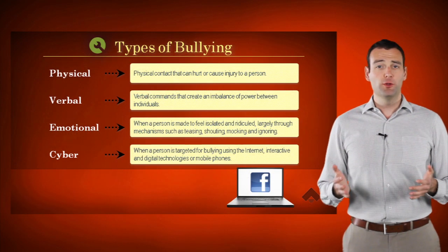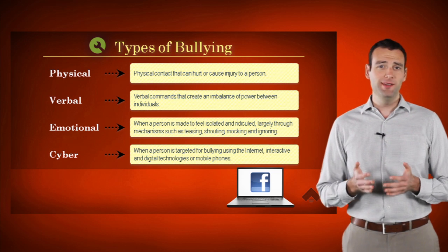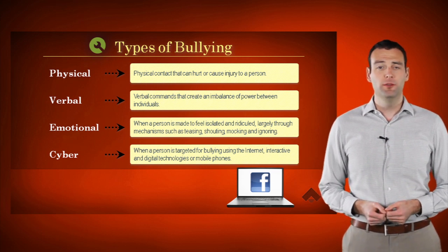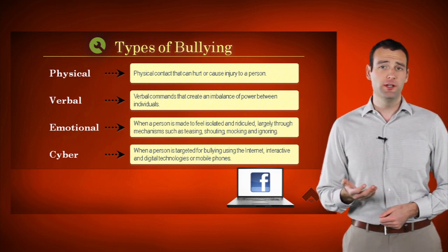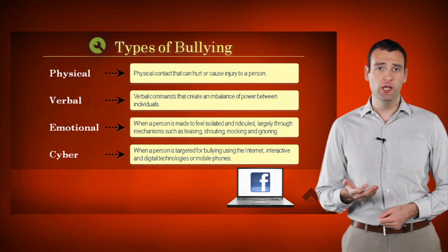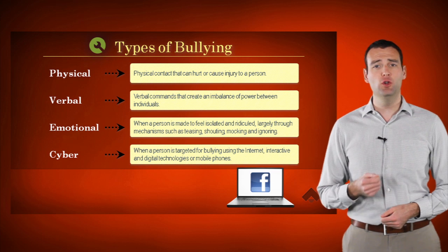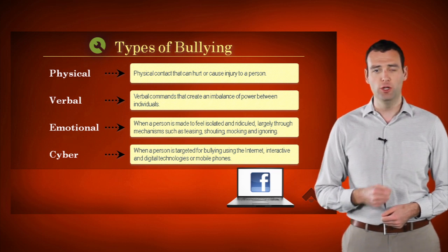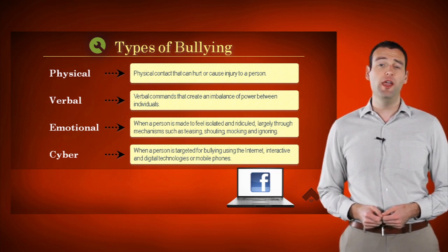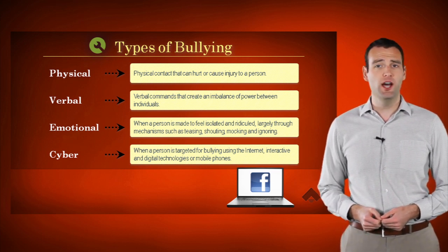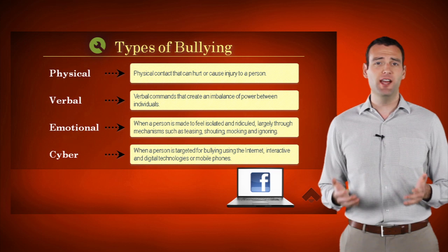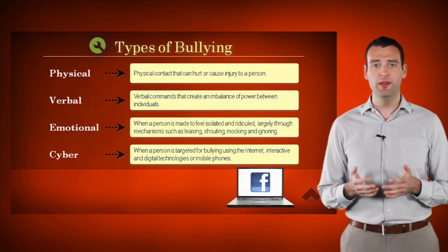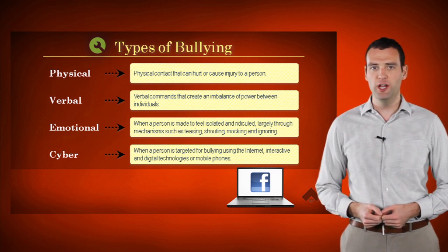Let's go over the four main types of bullying. The three primary types are physical, verbal, and emotional. The fourth and newest type is cyberbullying, brought about by the information age.